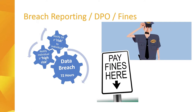A personal data breach can be broadly defined as a security incident that affects the confidentiality, integrity or availability of personal data. Where the breach is likely to result in risk to the rights and freedoms of individuals — such as discrimination, damage to reputation or financial loss — it must be reported to the ICO. Breaches likely to result in high risk to individuals must also be reported to the individuals themselves. You have 72 hours from becoming aware of the breach to report it. Failure to report when required can result in an additional fine on top of the fine for the breach itself.